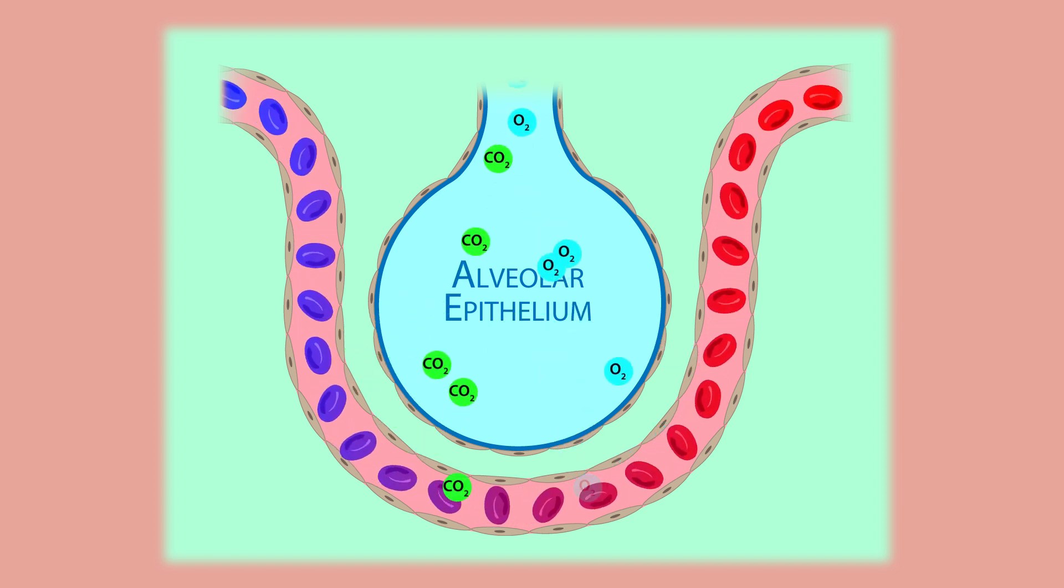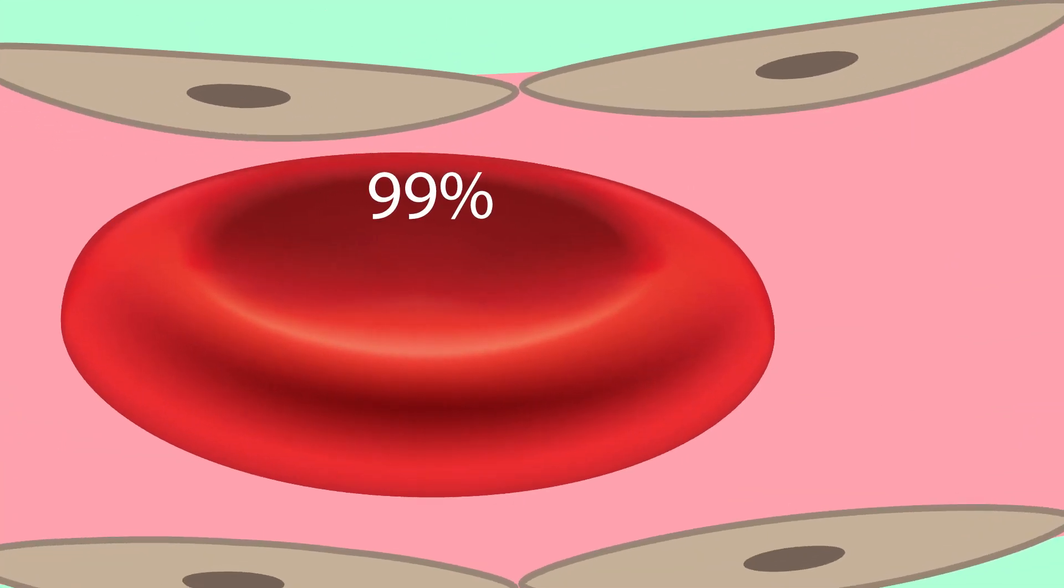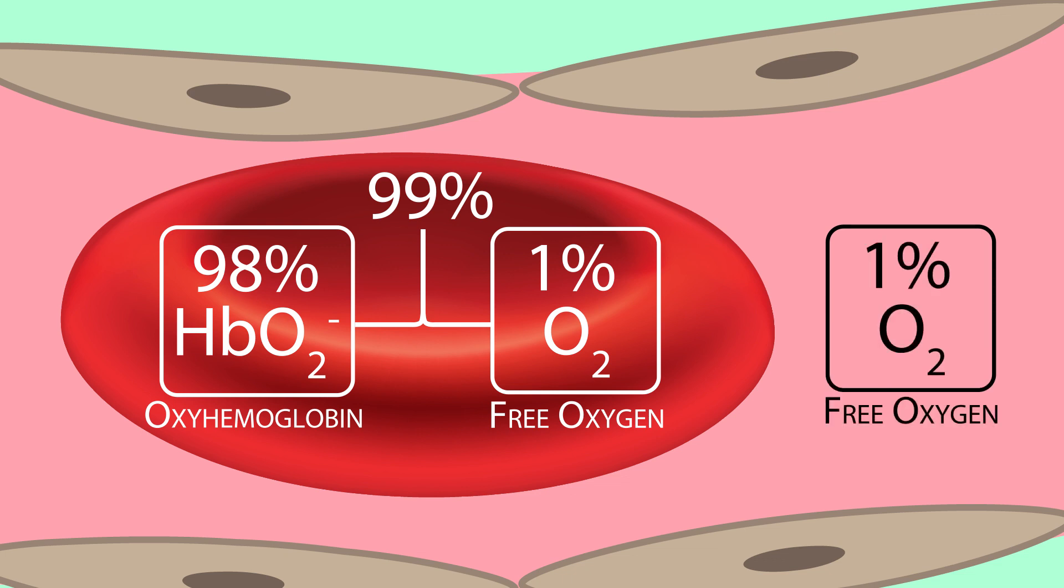Oxygen uptake begins as it diffuses across the alveolar epithelium into the pulmonary capillaries. Approximately 99% of the oxygen diffuses into the red blood cells, 98% of which binds to hemoglobin to form oxyhemoglobin, while the other 1% dissolves in the red blood cell cytosol. The remaining 1% of oxygen dissolves directly into the plasma.